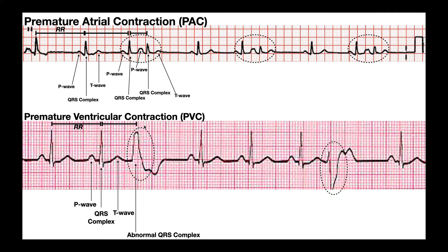Now when we come to the premature ventricular contraction, look at this QRS complex — it's very abnormal. The reason we say it's abnormal is because it's wide. When you see a wide, rounded QRS complex, that is an indication that the electrical signal was not originating from the atria. All the signals up here — whether premature or normal — originated in the atria, probably from the sinoatrial node. When you see a QRS complex that's both wide and rounded at the top, that's a sign the signal was not from the atria — it was exclusively created by the ventricles.